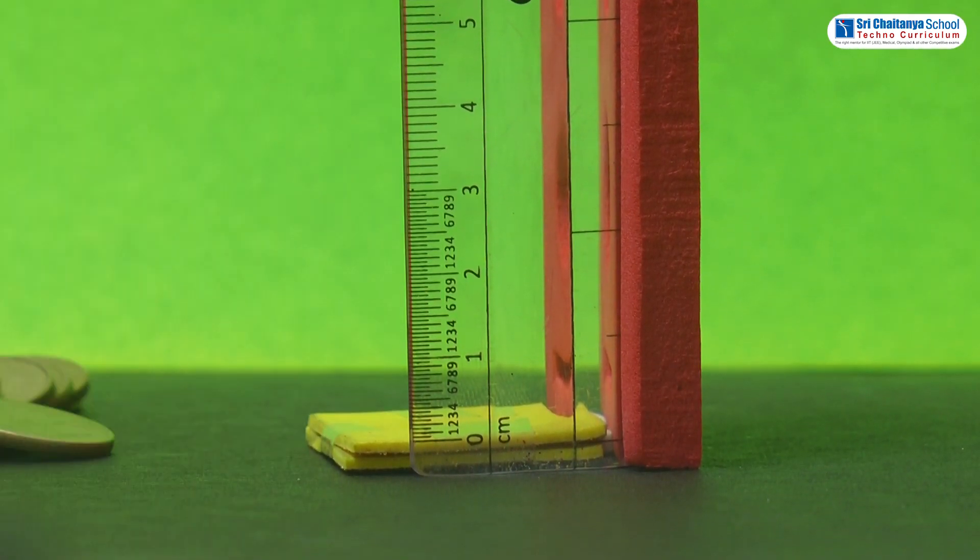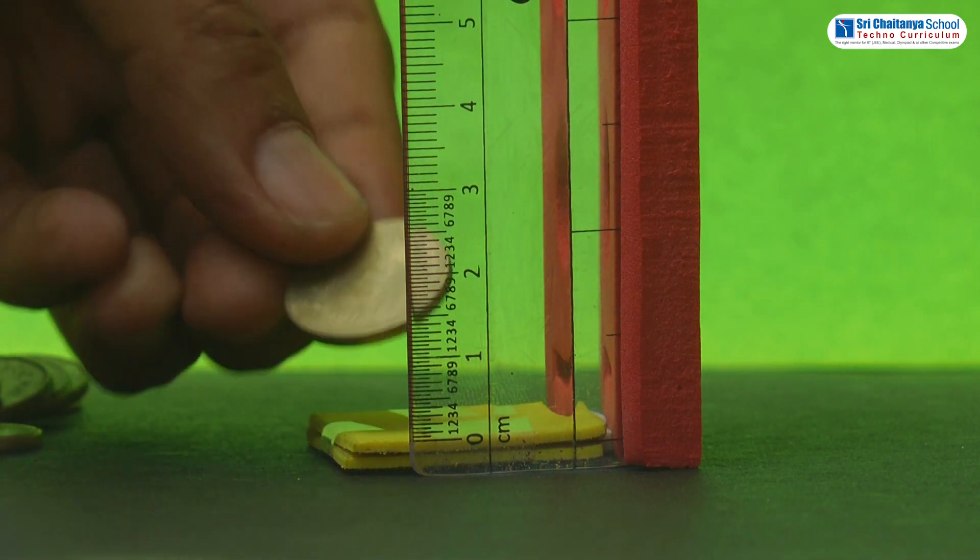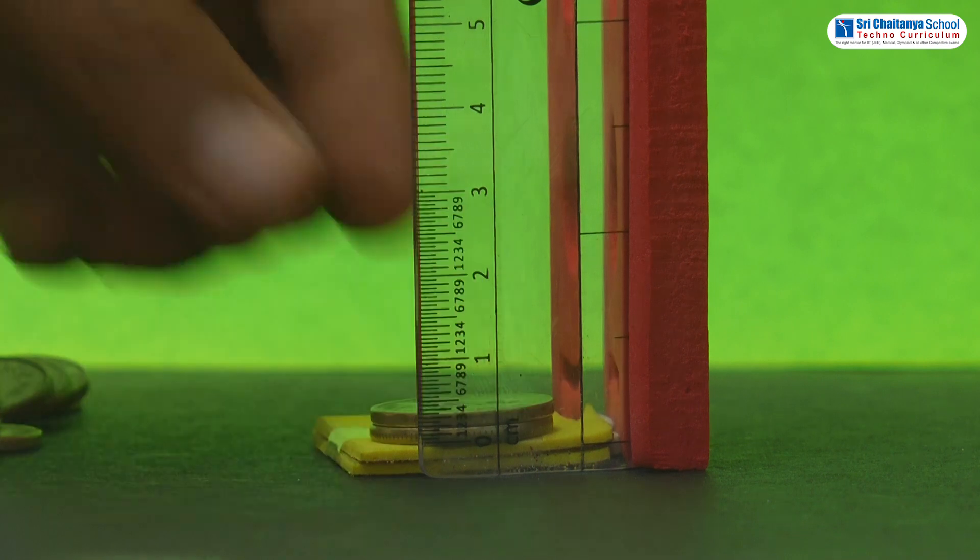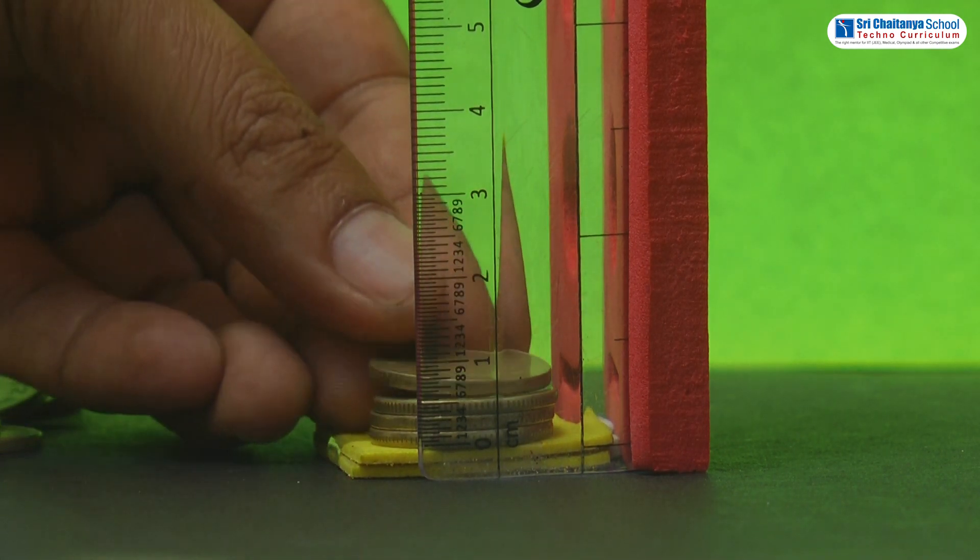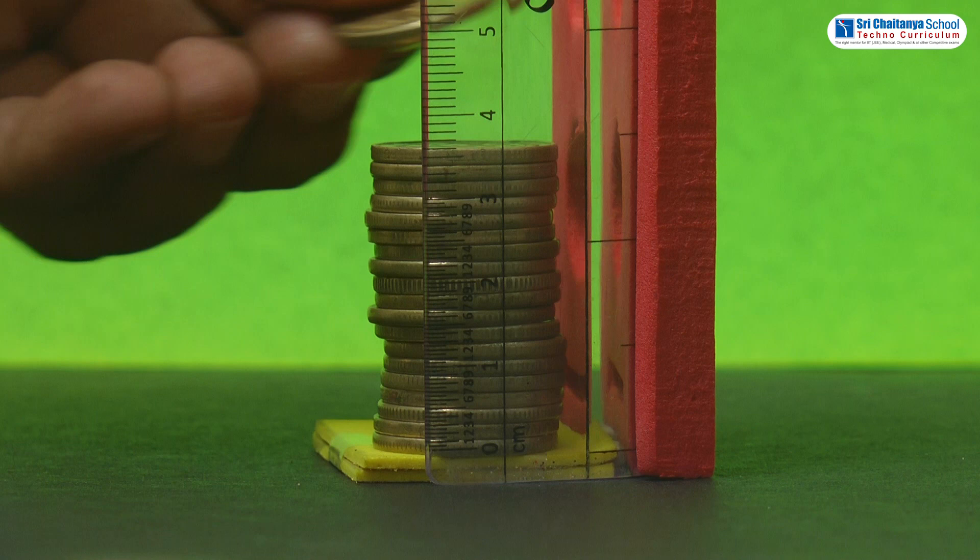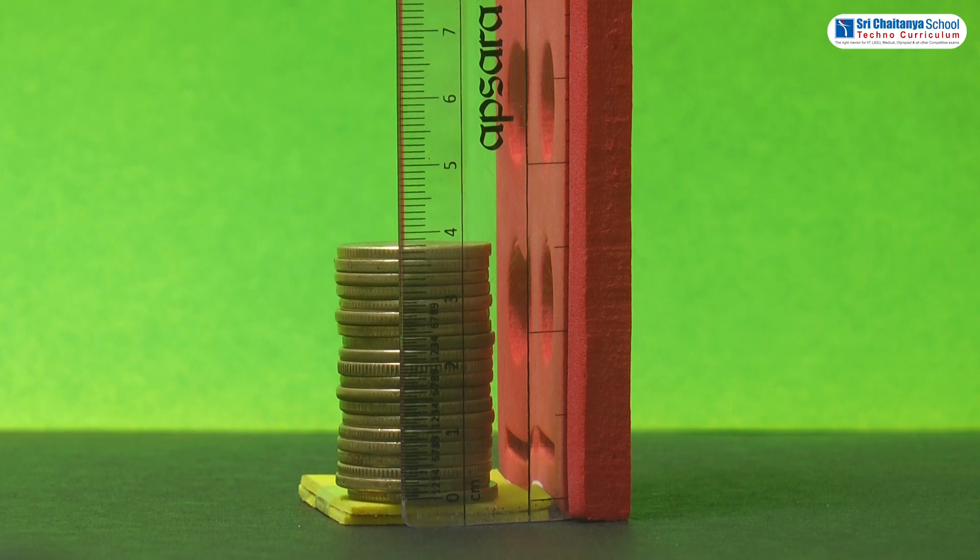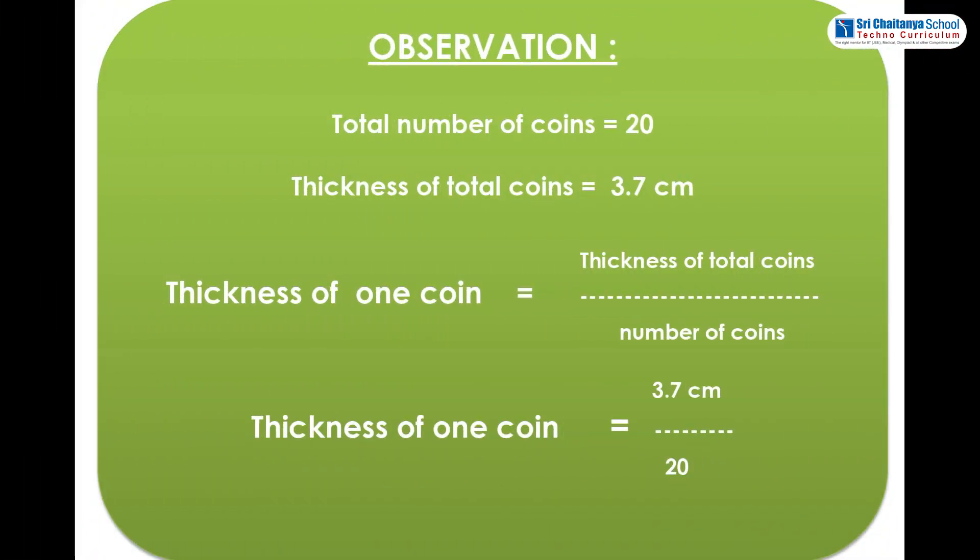Now, let us discuss the procedure. Take 25 rupee coins. Place these coins one on the other. With the help of a measuring scale, measure the thickness of 25 rupee coins vertically.